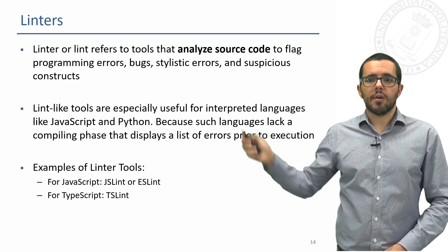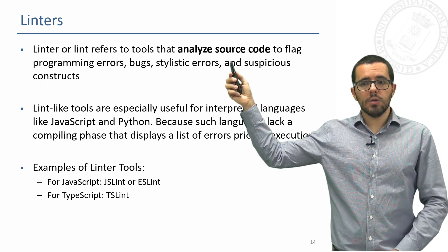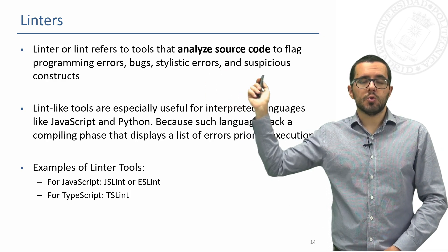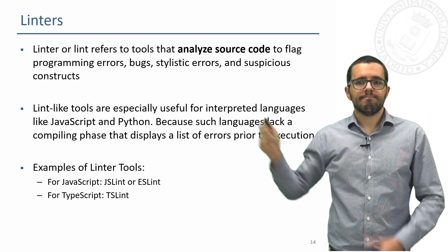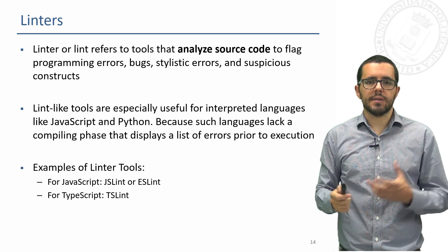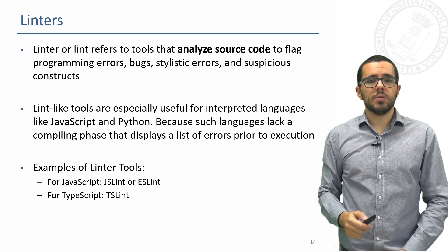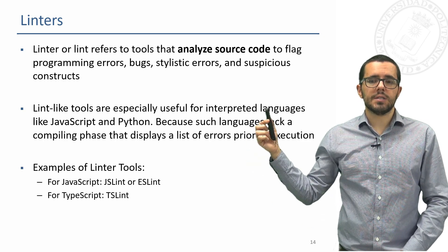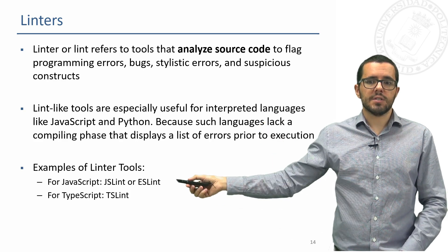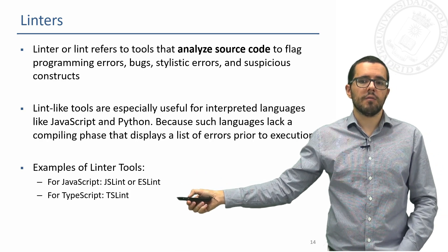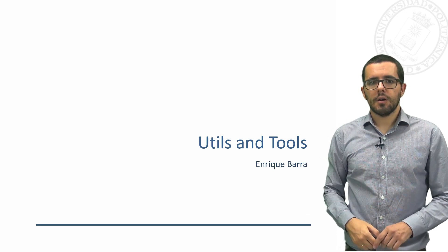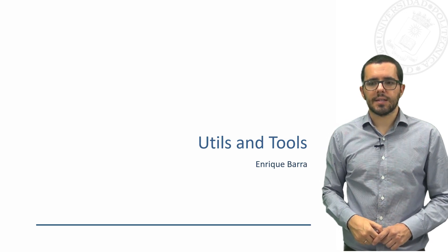Linter, or Lint, is a tool to analyze source code to find bugs, static errors, and suspicious constructions — to see if everything is ok before the browser interprets it. Linters are very useful in interpreted languages such as JavaScript or Python. For example we have JSLint, ESLint, or TSLint for JavaScript. That's all — thank you very much and see you in the next video.